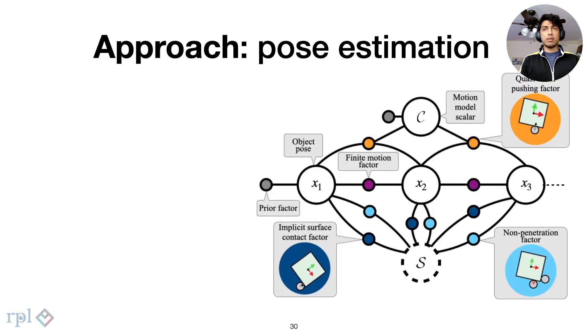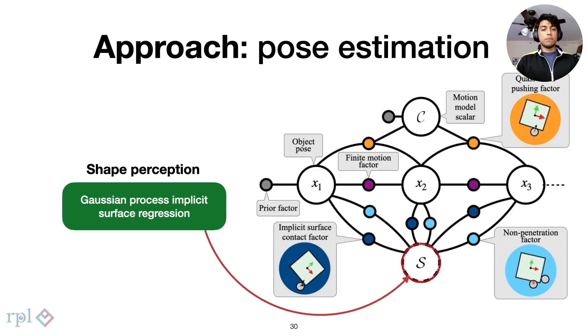Our factor graph, similar to prior work, combines geometric and physics-based constraints. This includes enforcing quasi-static pushing as our dynamics model, encouraging geometric validity that contact points must lie on an estimated implicit surface, and enforcing non-intersection for a pusher-slider when contact is not sensed. These factors are conditioned on the best estimate of the object's shape, which we get periodically from the shape perception module.